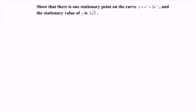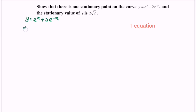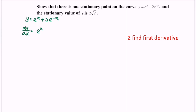The first step is to differentiate. We have y equal to e^x plus 2 multiplied with e^(−x). Find the first derivative. So dy/dx is equal to: differentiate e^x first — focus on the power, differentiate with respect to x, and we obtain 1.